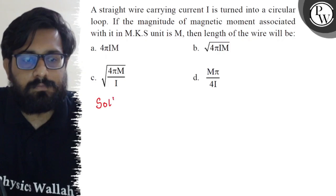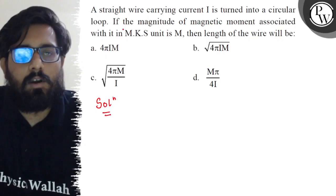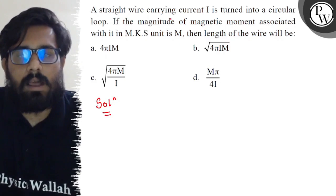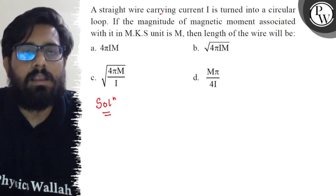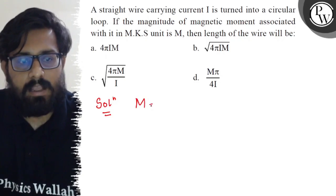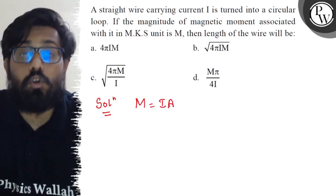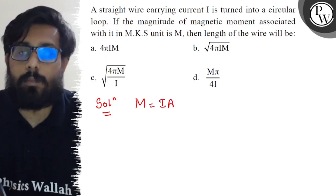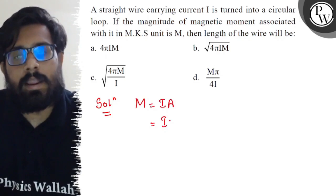We have a wire which is turned into a circular loop. So now for that we have magnetic moment as I into A. For the circular loop we have the magnetic moment as I into A, which is I into πr².